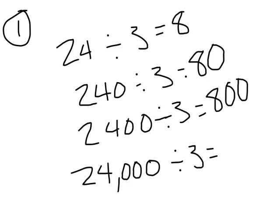When I divide 24,000 by 3, I'm dividing 24 thousands by 3. How many thousands would that be? It would be 8 thousands. Write that number in standard form — it's 8,000. So when I divide, I can use division facts and my knowledge of place values to help me.